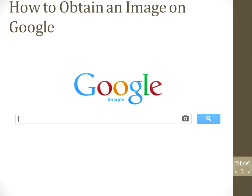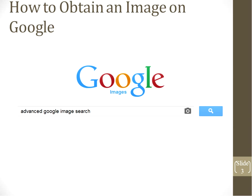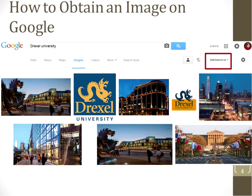A couple things that I learned: how to obtain an image on Google Images that I can actually use in my courses. I found out from my readings and searches that if you type into Google the advanced Google image search, you can find what you are looking for. So I put into the advanced Google search 'Drexel University,' and there is also an area in a red box to the right showing that safe search is on — I clicked on it and made sure it said safe search on. If you do that, the pictures you are using are supposed to be fair use images.